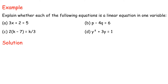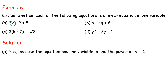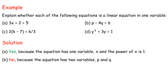Solution. (a) 3x + 2 = 5. Yes, because the equation has one variable, x, and the power of x is 1. (b) p - 4q = 6. No, because the equation has two variables, p and q.